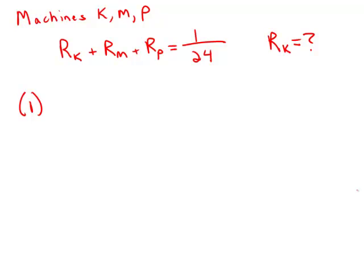Statement 1 tells us that M and P working simultaneously and independently at their respective constant rates can complete the task in 36 minutes. So when we add the rate of M and the rate of P, we get a combined rate of one task in 36 minutes.